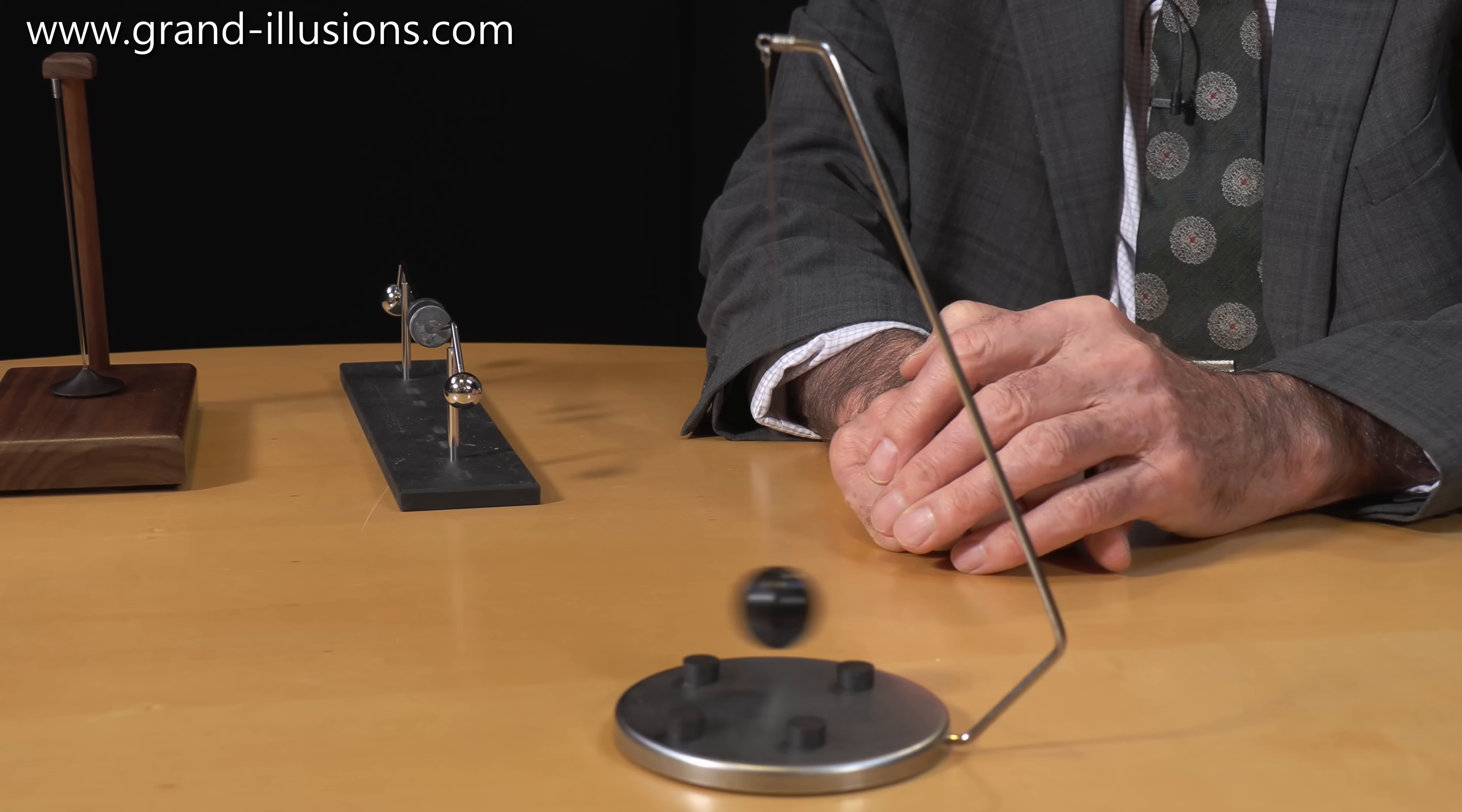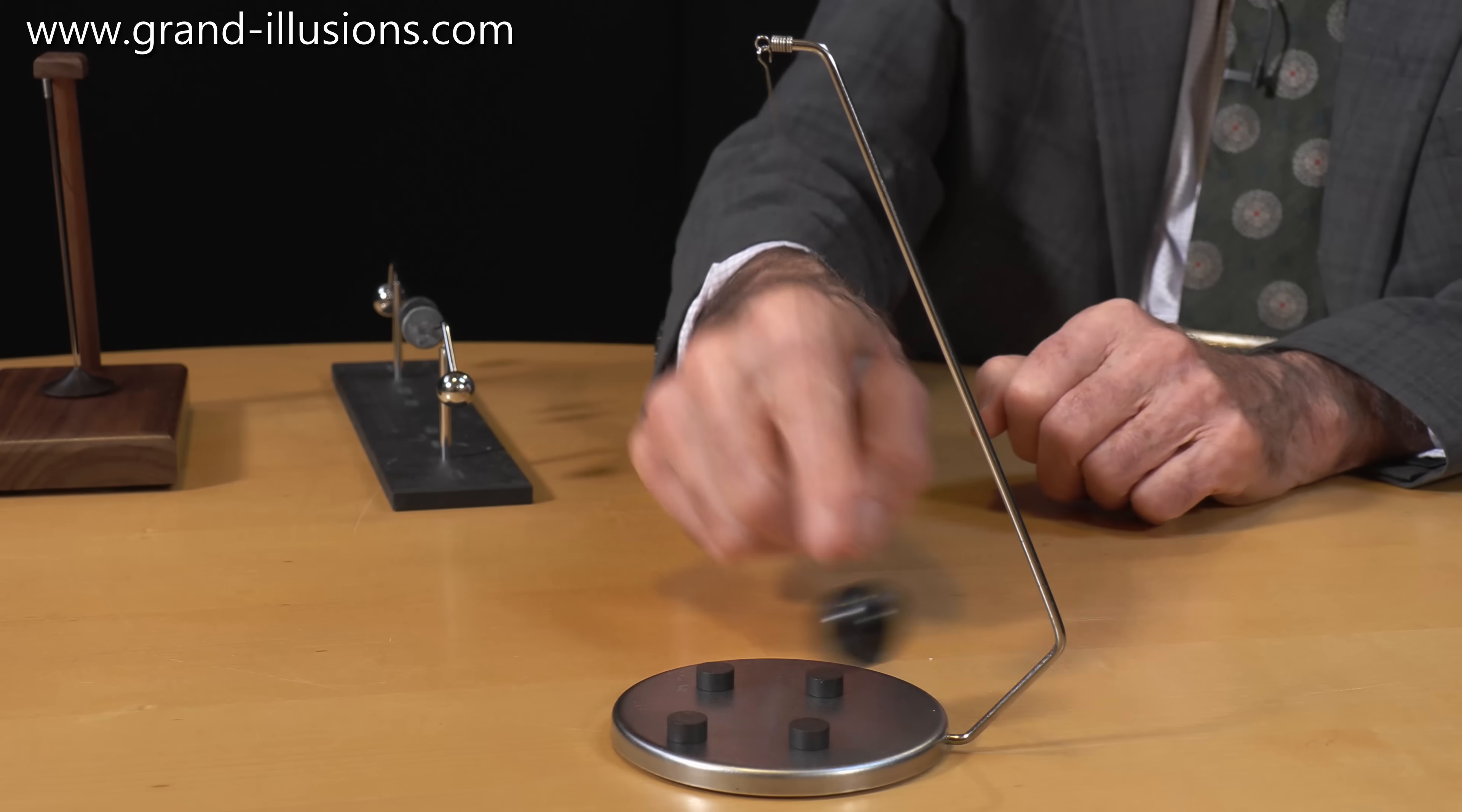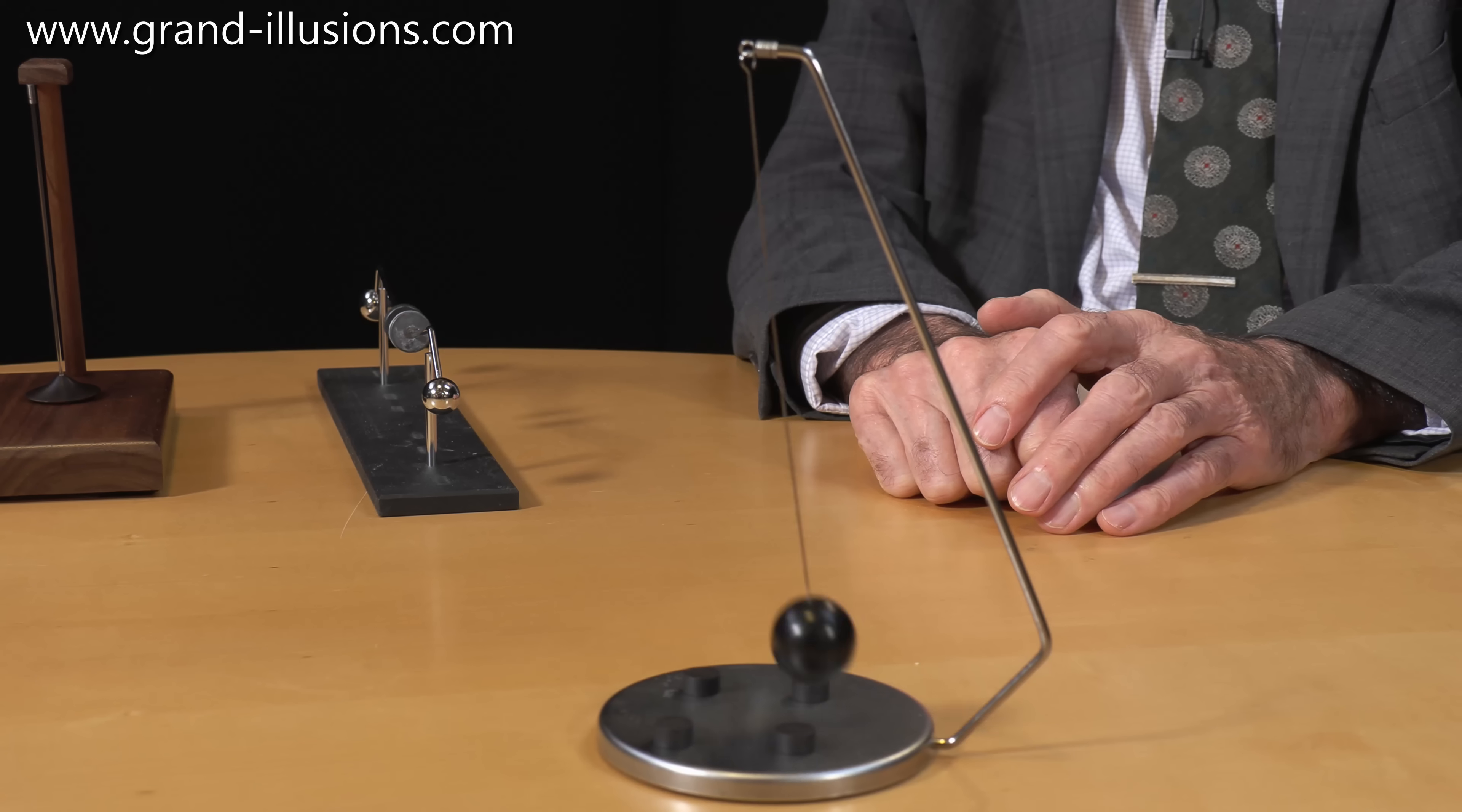And it'll come to rest in a particular place, but not usually, well sometimes in the centre, it says too far away, but otherwise it'll be a little bit off centre. So another one which is purely chaotic motion, and no batteries involved with either these first two, or the first three.